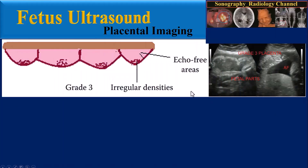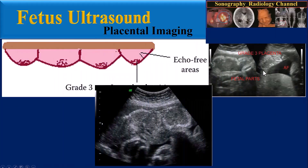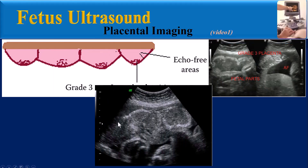In grade 3, there are complete indentations through the basal plate creating cotyledons, with more irregular calcifications and substantial shadowing. This type of placenta is seen at the late third trimester, around 39 weeks of gestation and in post-date fetuses.